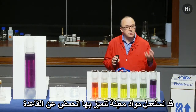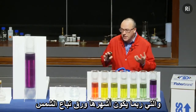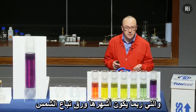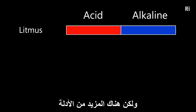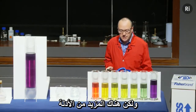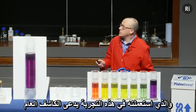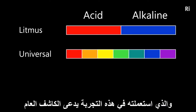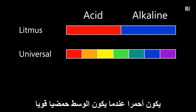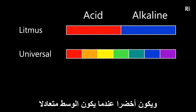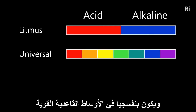We can use certain substances to tell us whether a material is acid or alkali, and probably one of the most famous of these is called litmus. Litmus is red in acid conditions and blue in alkali conditions. But there are lots of other indicators, and the one we used in this experiment was called universal indicator. This has a range of different colours: it's red when things are strongly acidic, green when things are neutral, and purple in strongly alkali conditions.